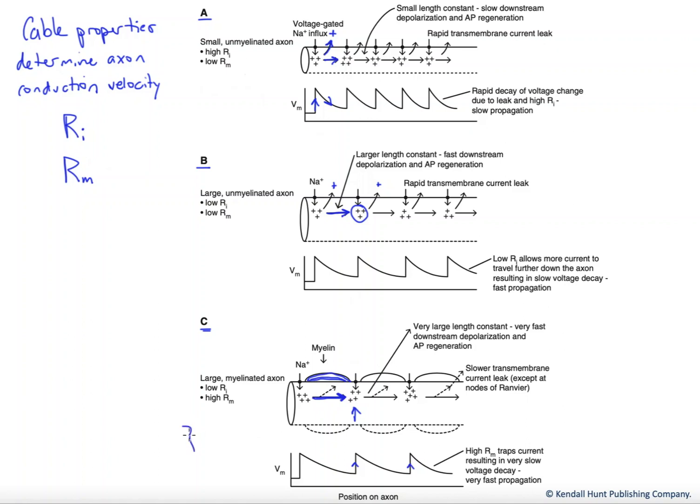If we draw that out as the length constant, lambda is proportional to RM over RI. And so lambda, the answer over here, our length constant is large if the resistance of the membrane is high, add myelin, and the resistance internally is low, make the axon larger.